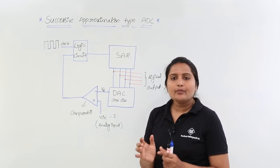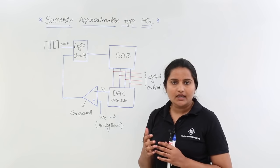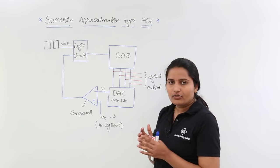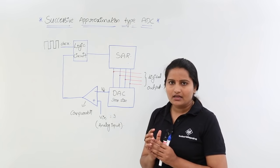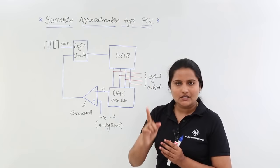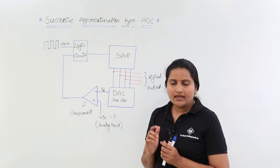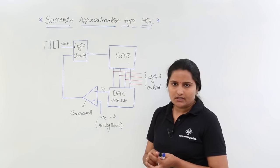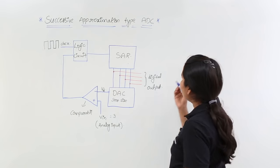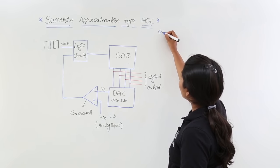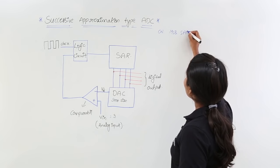Now it is very important to know how this SAR — successive approximation register — performs its algorithm. Whenever we switch on the circuit, the SAR is going to put its MSB bit as 1. It places its MSB bit as 1 and then performs the procedure.